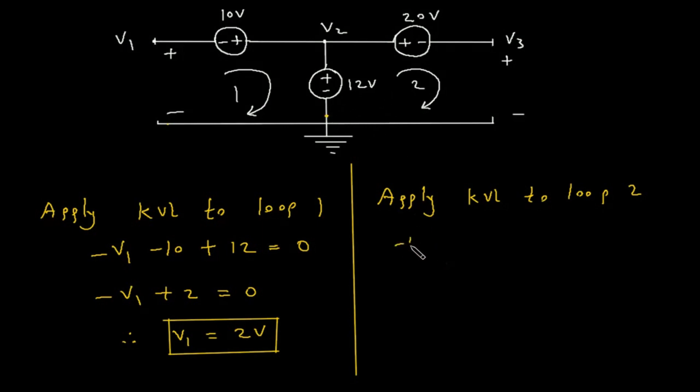So, minus 12, plus 20, plus V3 is equal to 0. So, this will be 8 plus V3 is equal to 0. Therefore, V3 is equal to minus 8.